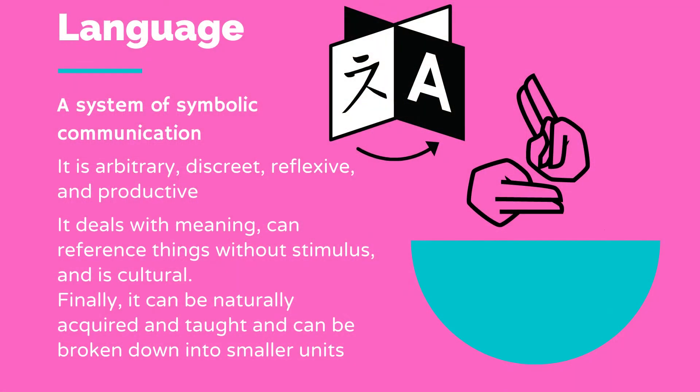First, let's define language. Language is a system of symbolic communication. It is arbitrary, discrete, reflexive, and productive. It deals with meaning, can reference things without stimulus, and is cultural. Finally, it can be naturally acquired and taught, and be broken down into smaller units. Basically, language is putting together sounds and/or hand signs into sentences to talk about concepts and ideas that are shared by a culture and/or a society.